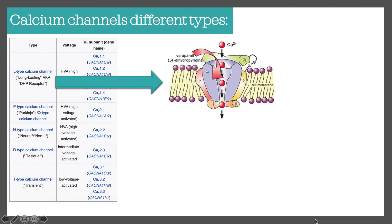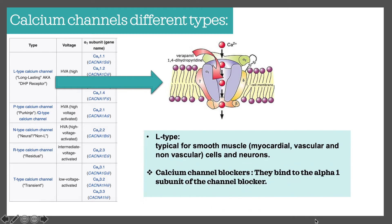Calcium channel blockers block the alpha-1 subunit. L-type channels are typically for smooth muscles such as myocardial tissue, vascular blood vessels, and non-vascular cells such as neurons. So if you get a question asking where exactly on the L-type calcium channel the drug acts, the alpha-1 subunit is the correct answer.